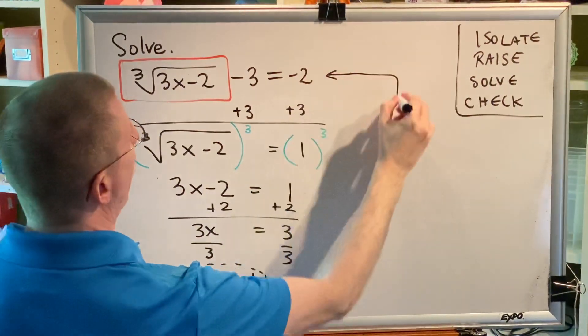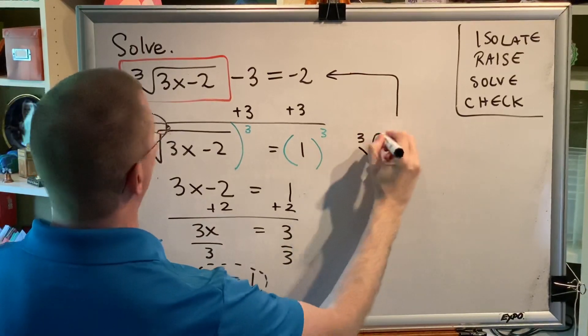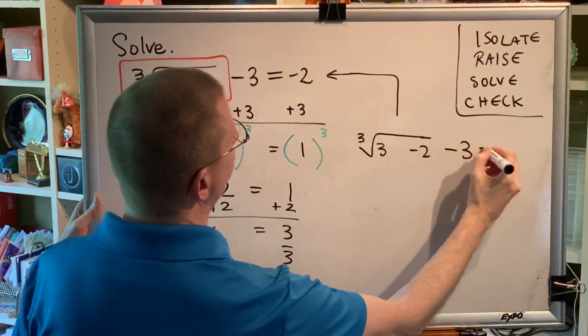We're going to use this equation, but everywhere we see an x, we're going to put 1, and then we're going to evaluate the left side of the equation, and we're going to evaluate the right side of the equation, and see if they match.